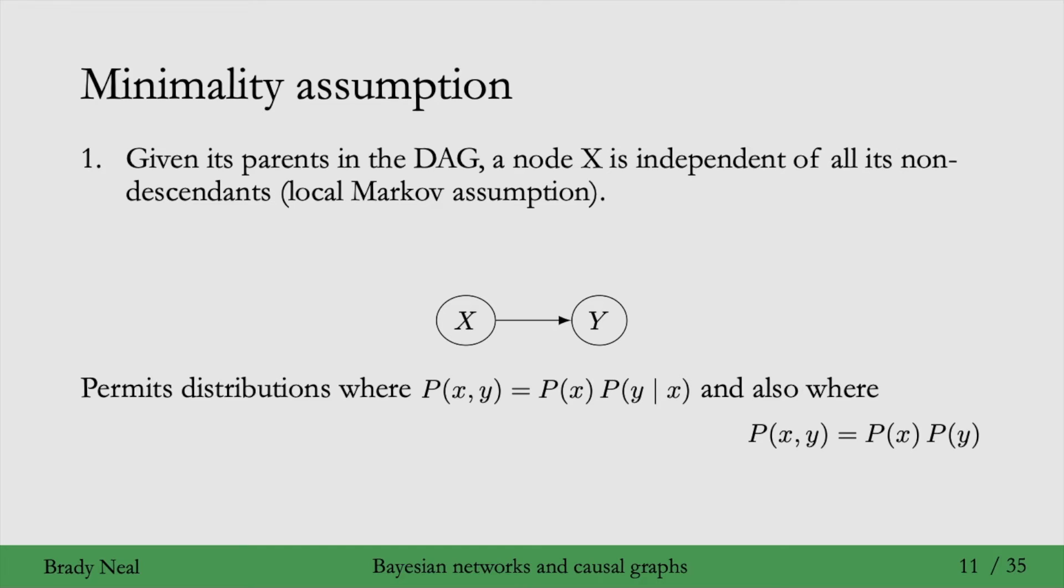So the minimality assumption also adds this second part, which is that adjacent nodes in the DAG are dependent. And now that we've added this second part to the local Markov assumption, this graph x with an edge to y no longer permits distributions that factorize as P of x times P of y. It no longer permits distributions where x and y are independent.